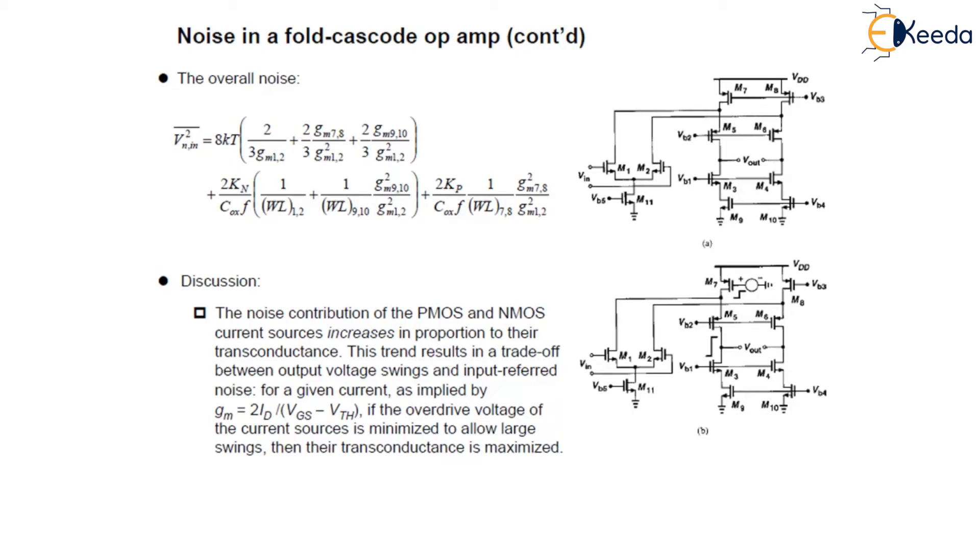For a given current as implied by Gm equals 2Id/(VGS-Vth), if the overdrive voltage of the current sources is minimized to allow large swing, then the transconductance is maximized.